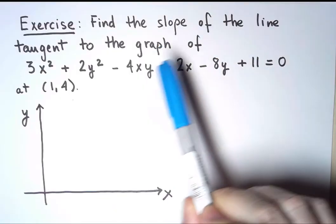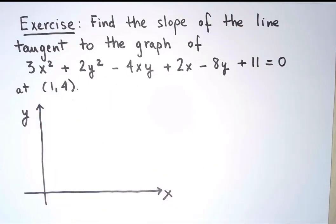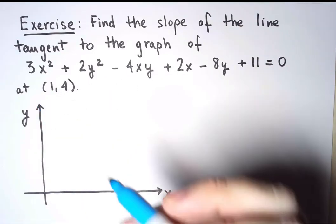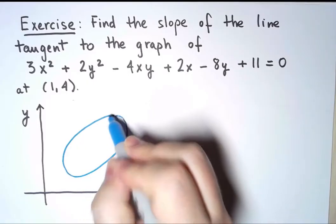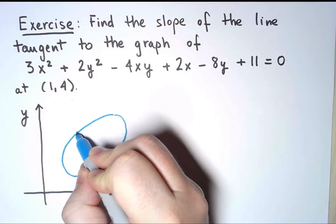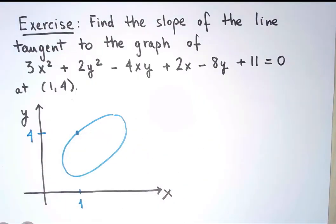I want to find the slope of the line tangent to the graph of this equation at the point (1,4). This equation describes a curve that looks something like this. Let's say that this is the point (1,4). So here is 1, and here is 4. This is not at scale.